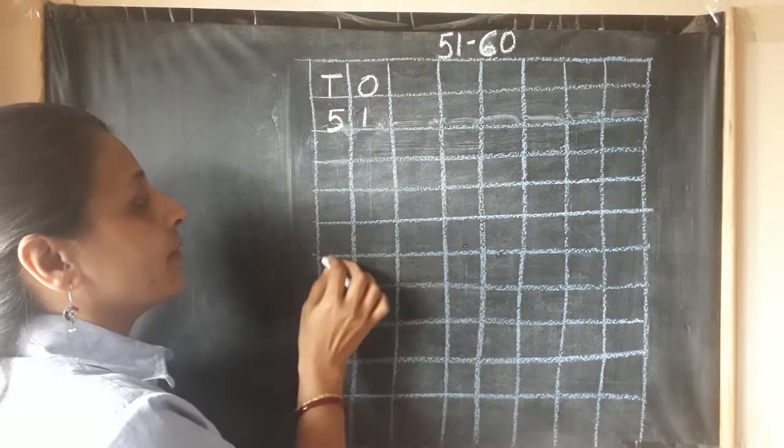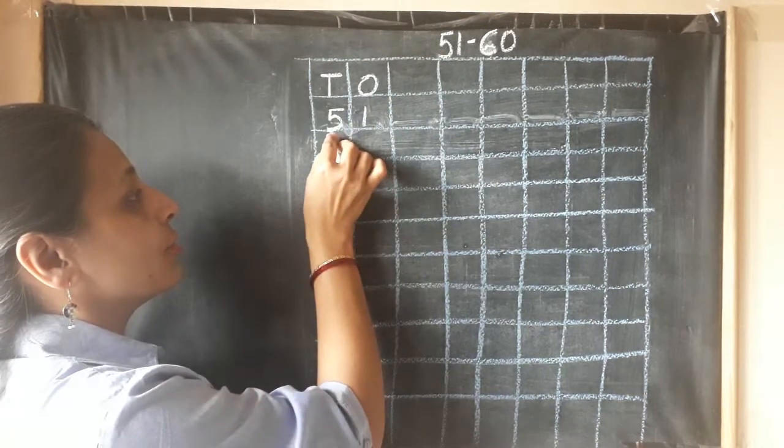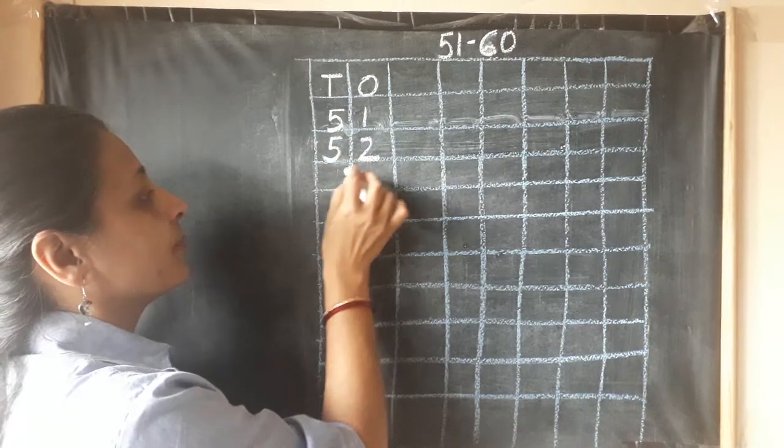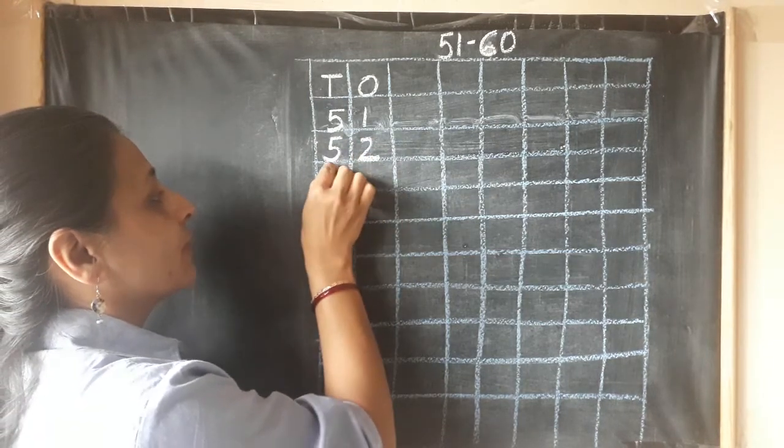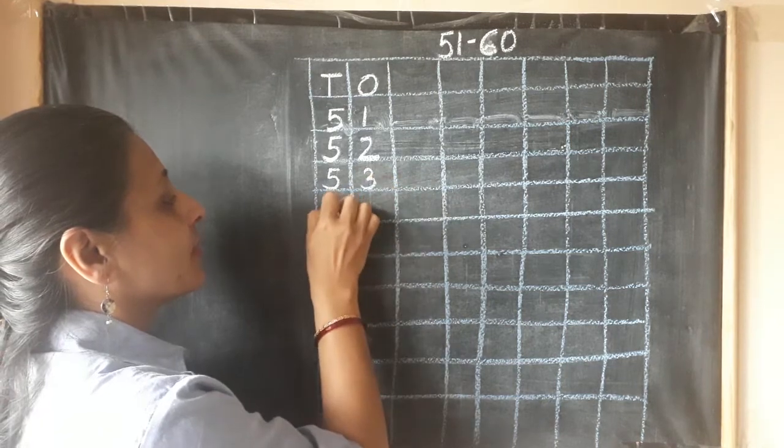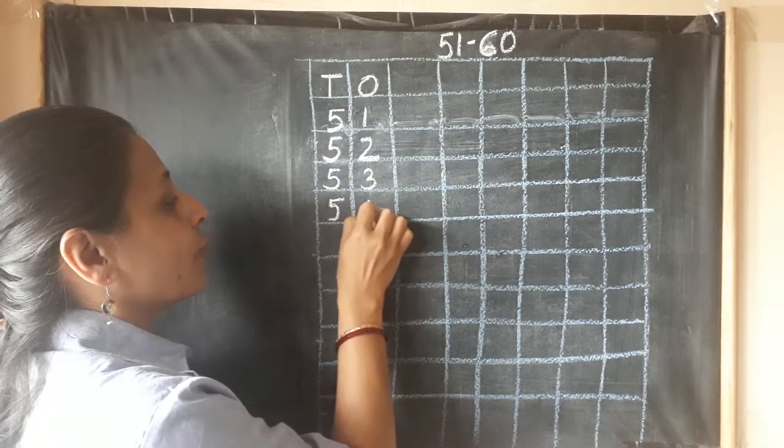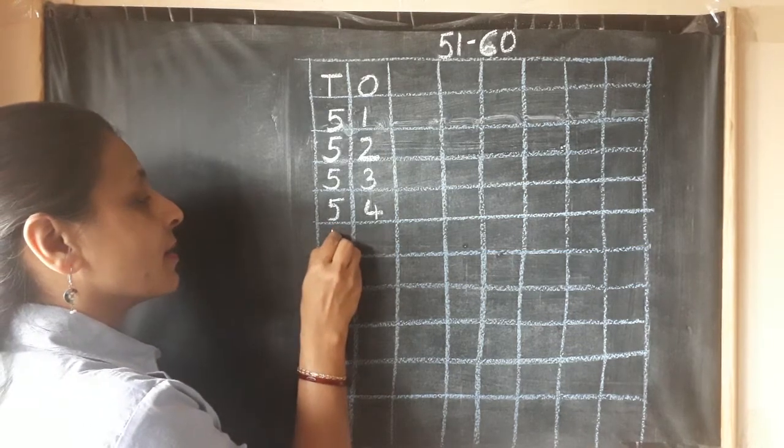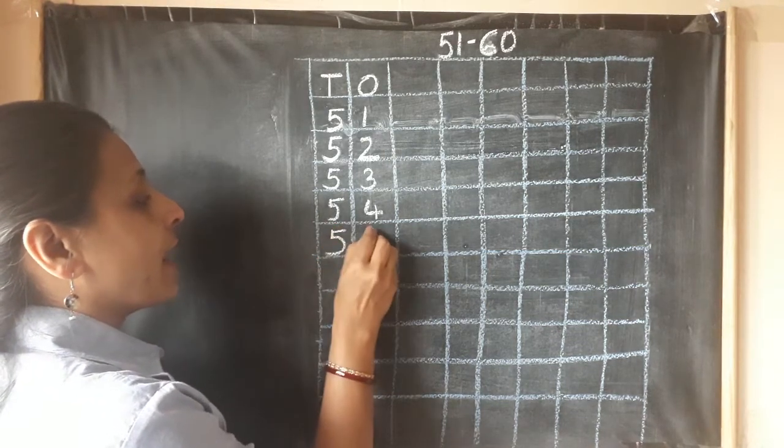The teacher writes the first half of the sequence: 5, 1, 51. Now we are not going to leave the box. 5, 2, 52. 5, 3, 53. 5, 4, 54. 5, 5, 55.